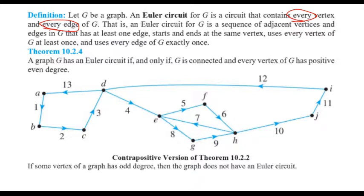Let's see Theorem 10.2.4, which gives a necessary and sufficient condition for a graph to have an Euler circuit. A graph G has an Euler circuit if and only if G is connected and every vertex of G has a positive even degree. The degree of a vertex is the number of edges incident on that vertex. So a graph has an Euler circuit if and only if all its vertices have even degrees.